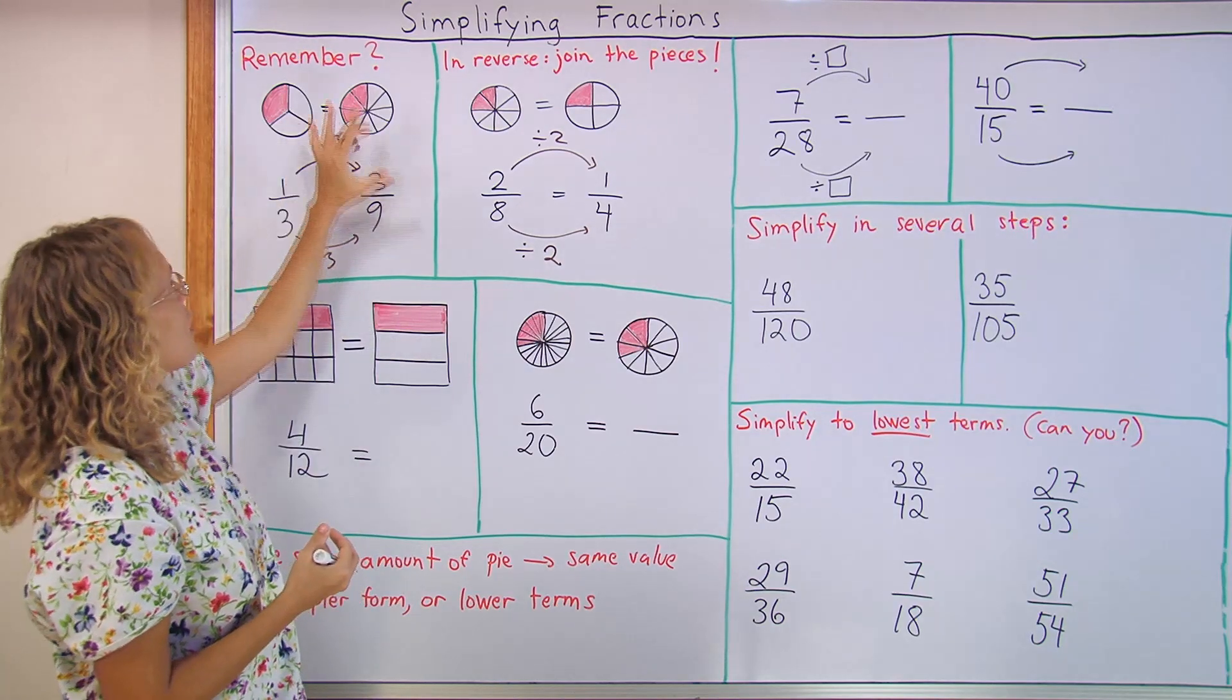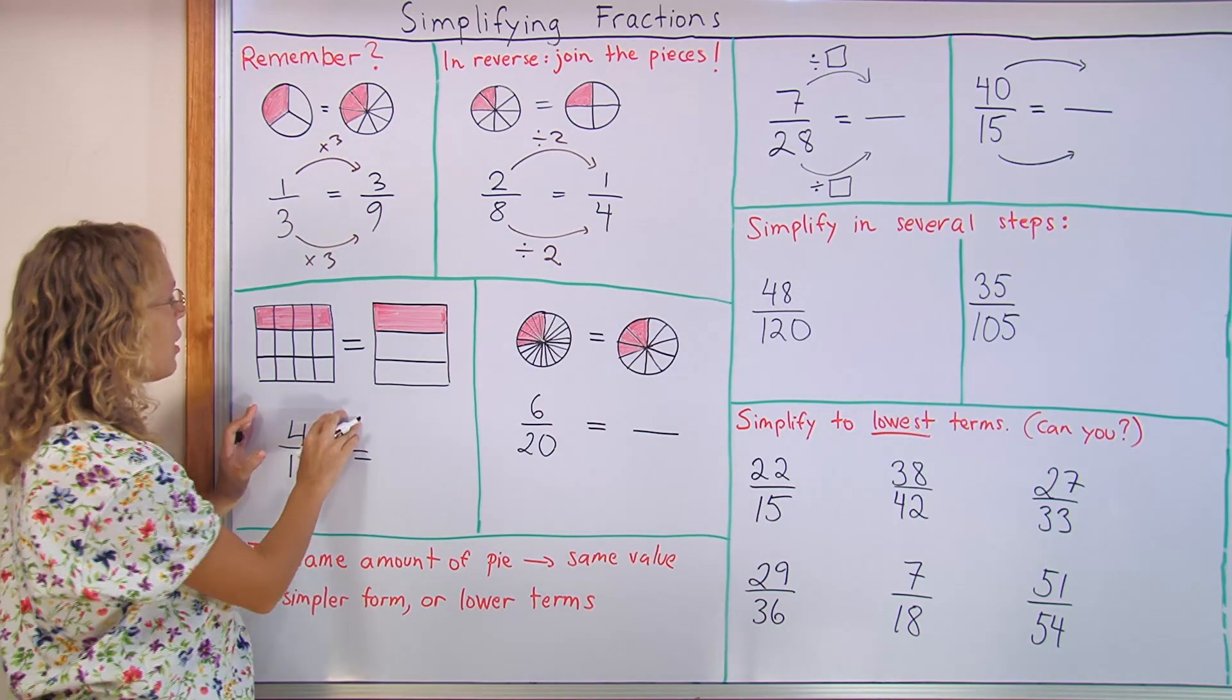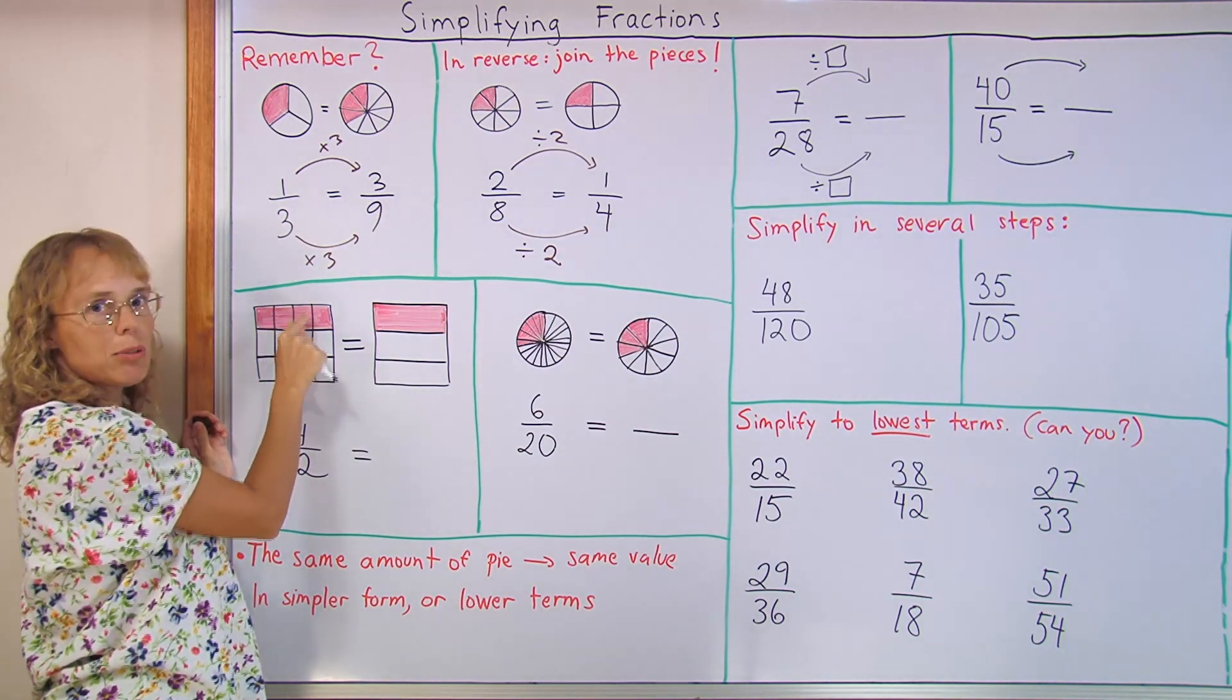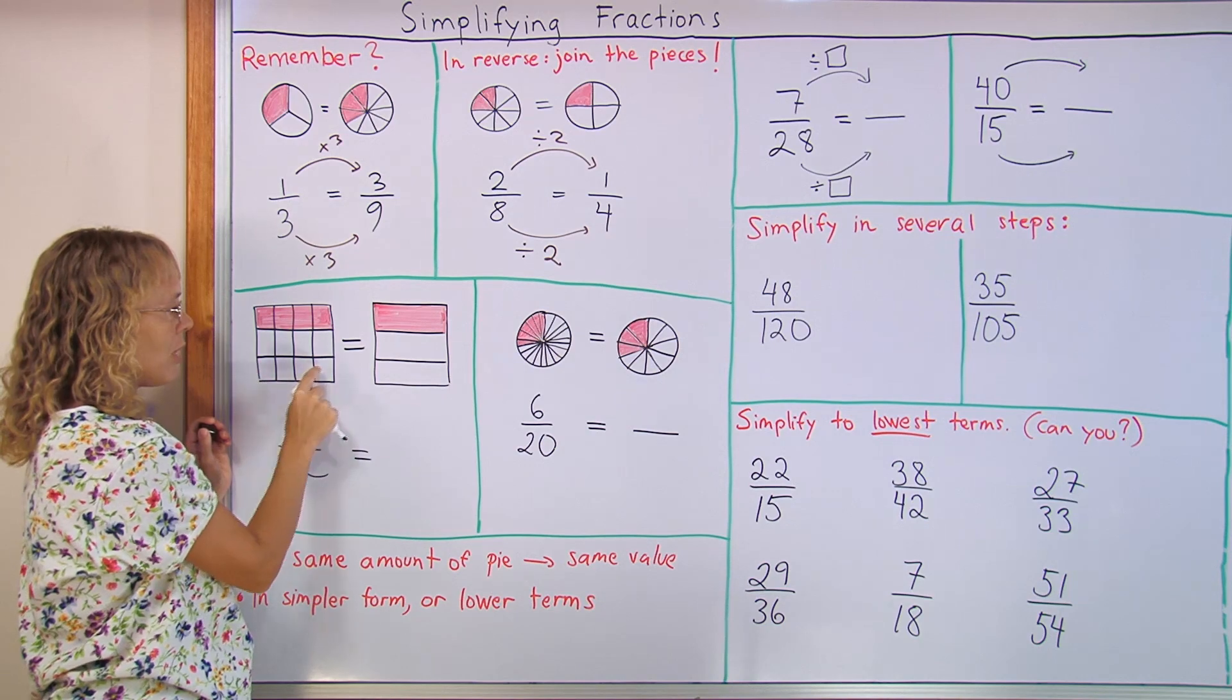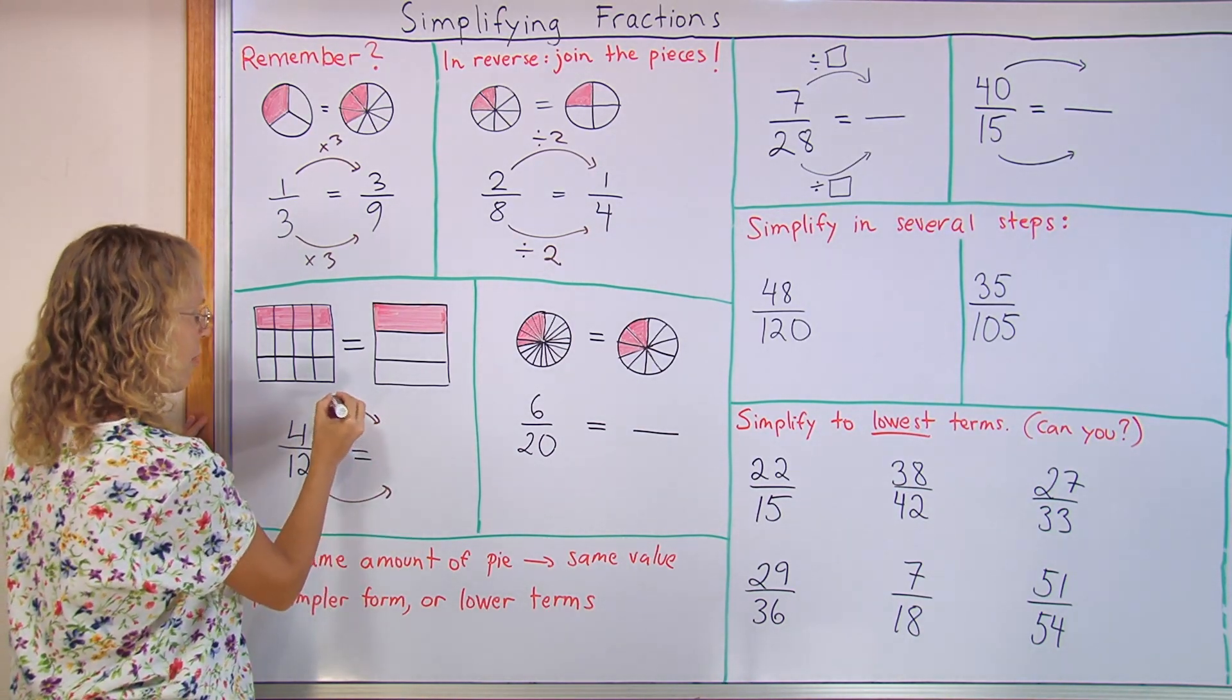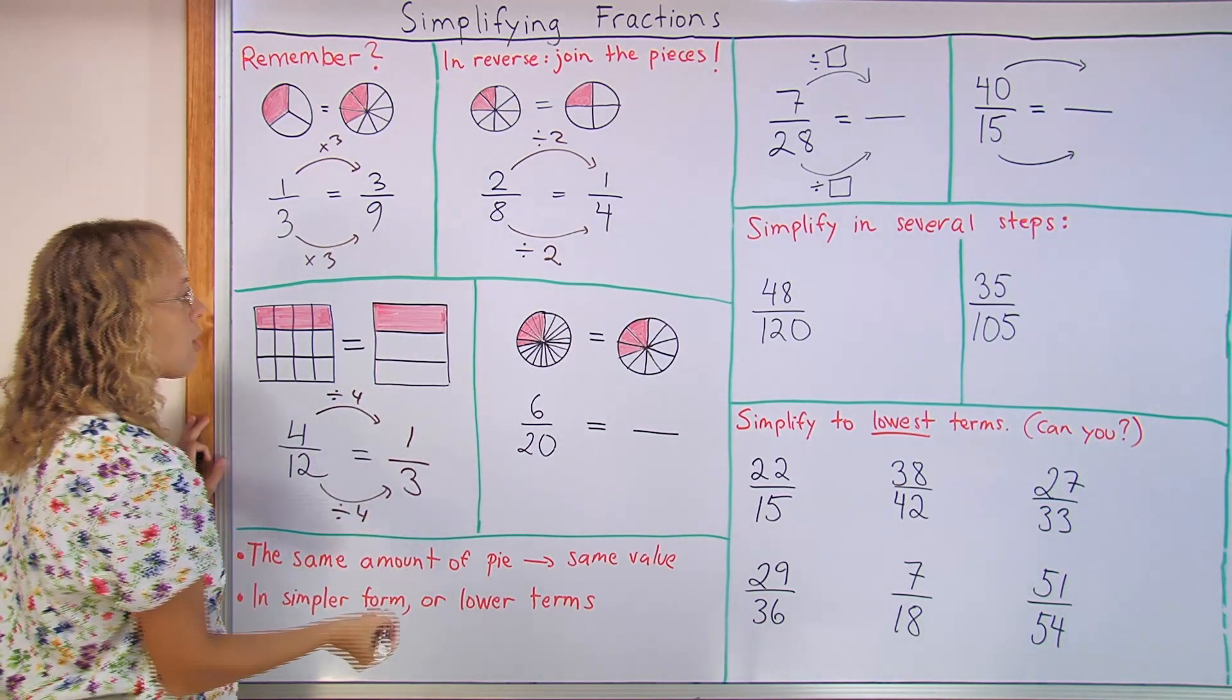After students have understood this process well, then this should be very easy to understand. But it is still good to go through some visual exercises with visual models. For example, here I have four twelfths and let's say that these four pieces are joined together. It is as if these black lines between disappear, so we get just one piece here. So we have four times less pieces and to show it here with the fraction, divide by four. Four divided by four is one, one colored piece and three total pieces, one third.